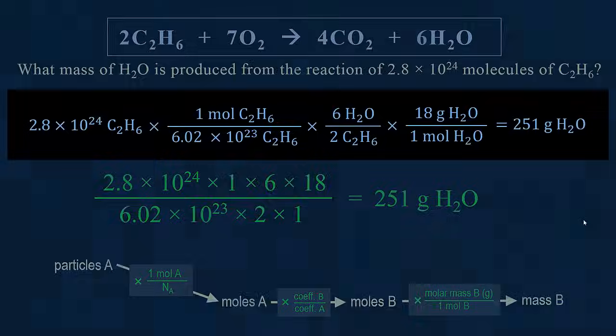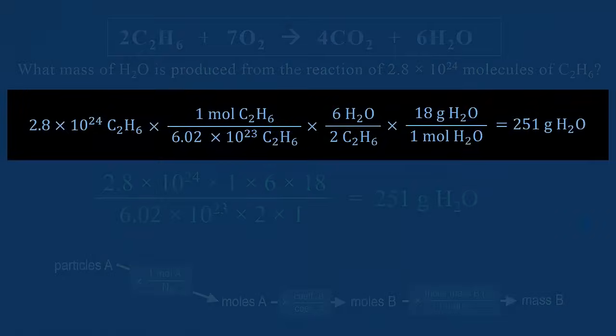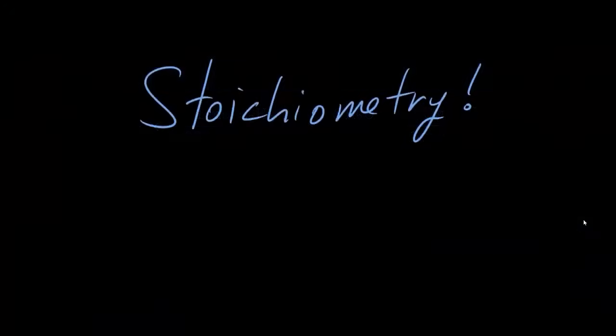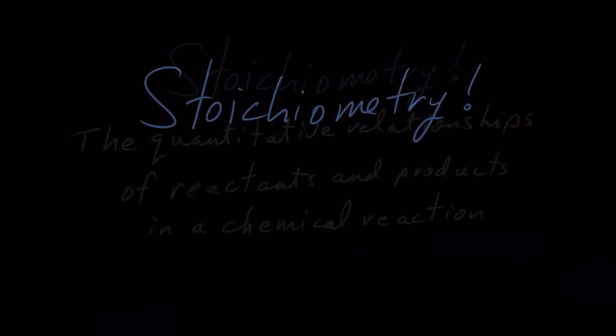So that is basic stoichiometry — the map gives us the path to handle large quantities.